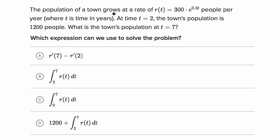The population of a town grows at a rate of R of T is equal to 300 times E to the 0.3 T people per year, where T is time in years. At time T is equal to two, the town's population is 1,200 people. What is the town's population at T is equal to seven?